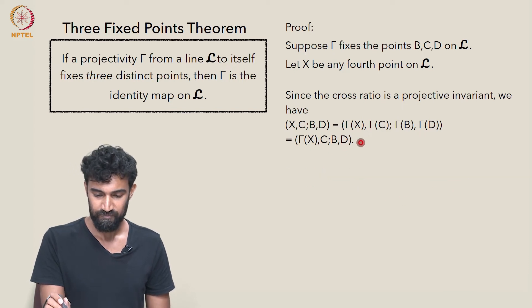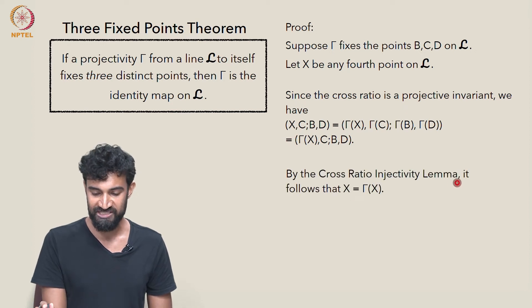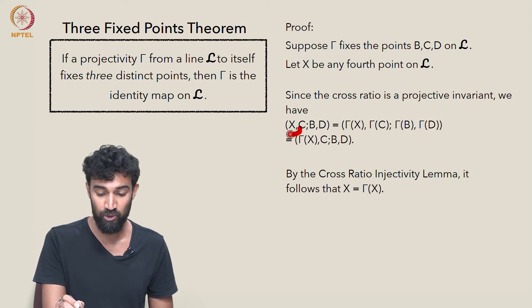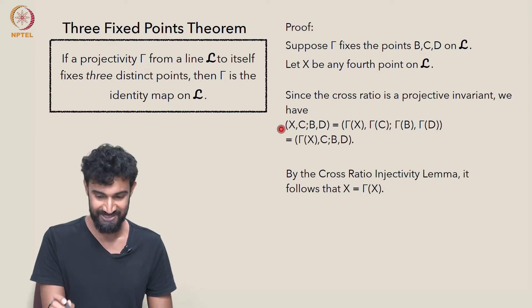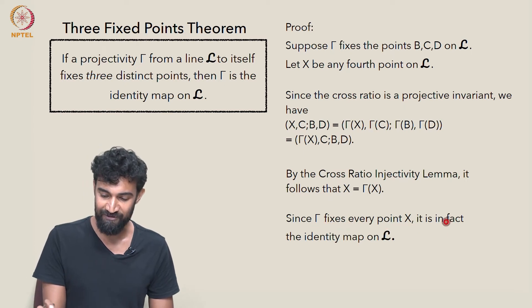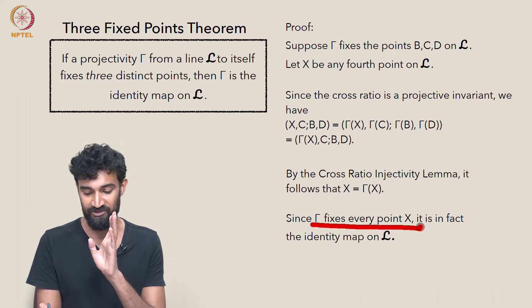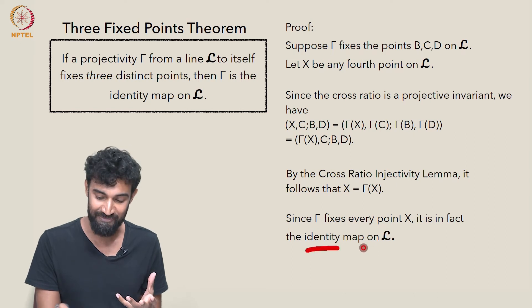But now, by the cross-ratio injectivity lemma, what can we say? We have that this cross-ratio and this cross-ratio are equal. So by the cross-ratio injectivity lemma, the thing in the first parameter of the cross-ratio over here, namely gamma of X, has to be equal to the thing in the first parameter over here, namely X. So X is equal to gamma of X. Since gamma fixes every point X, so in particular, gamma is now fixing X. If gamma of X is equal to X, gamma also fixes X. But this was true for an arbitrary X. So gamma fixes every single X on the line L. And therefore, it's the identity map on L.